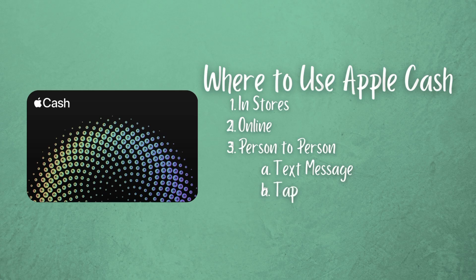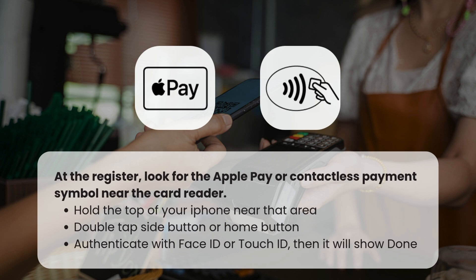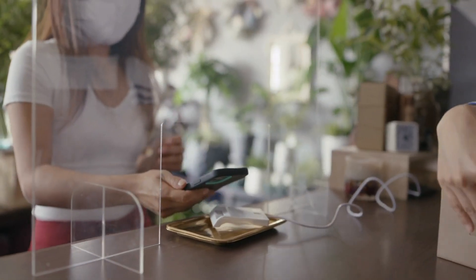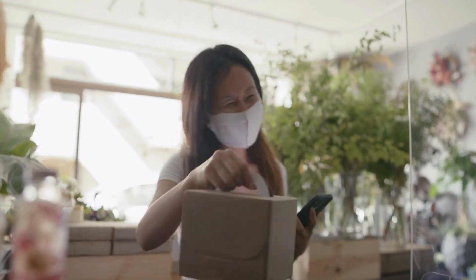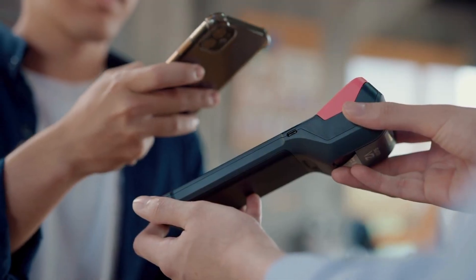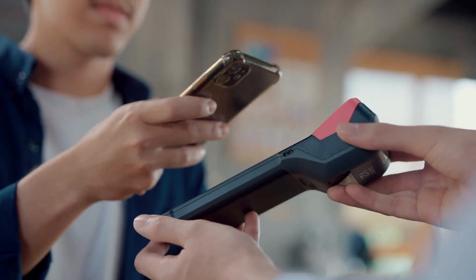We've got it set up and it's our default card now. First, you can use it in stores with Apple Pay. When you're shopping and ready to check out, pull out your iPhone and double tap the side button or the home button — that automatically opens the Wallet. The default card, which is the one on top, is where the money will come from. Look for the Apple Pay or the contactless payment symbol near the card reader. Just hold your phone near the reader and it will authenticate with your face or your fingerprint, then complete the payment. If you're not used to paying with your iPhone, it might feel unfamiliar, but it's so much easier once you get used to it, and you don't have to worry about leaving your wallet or purse at home.